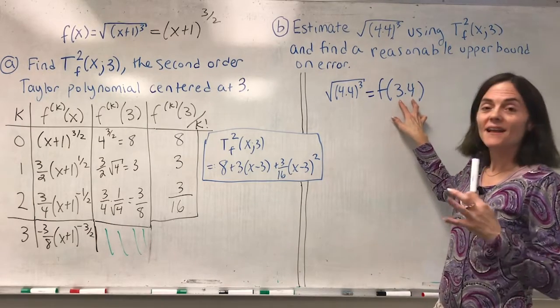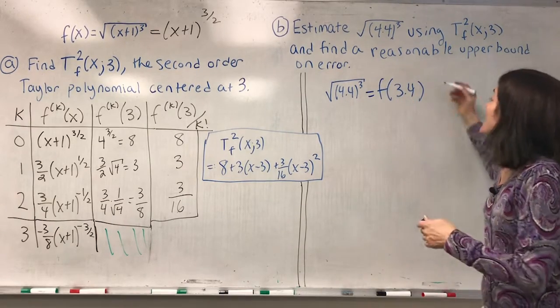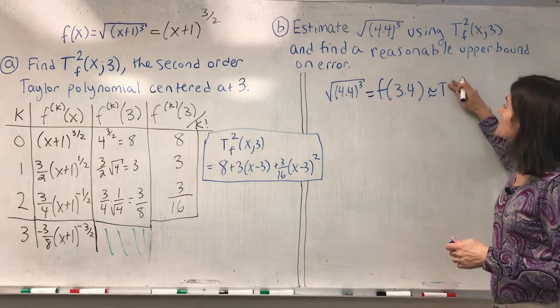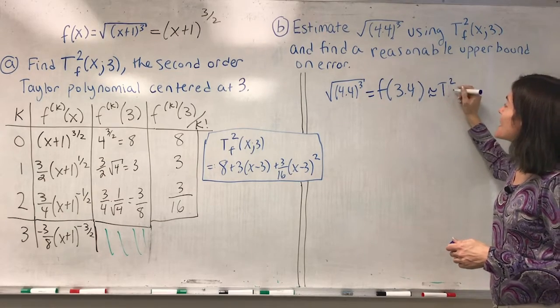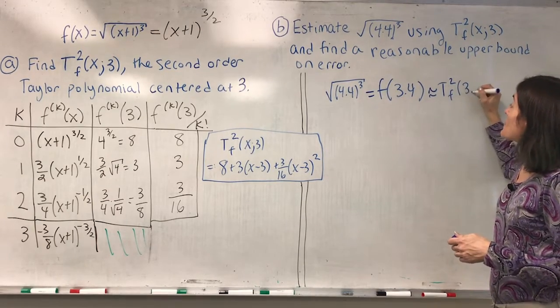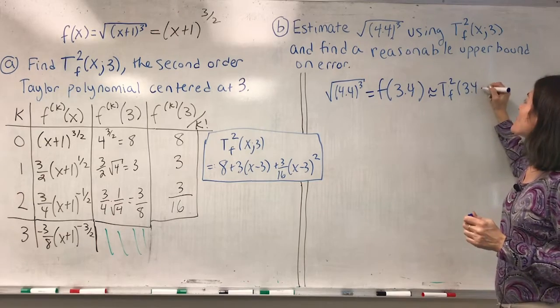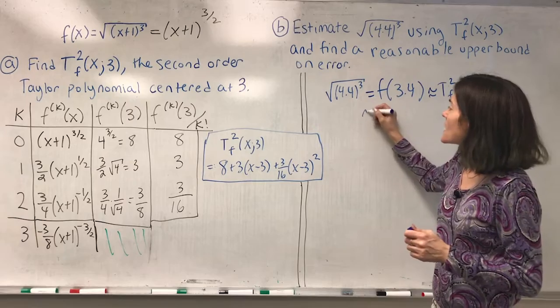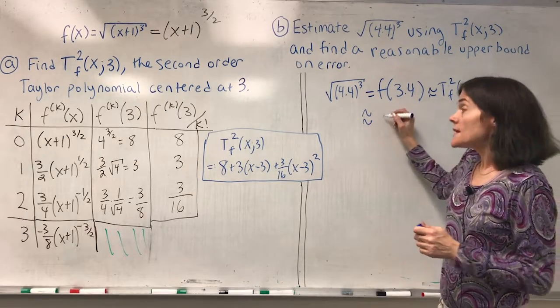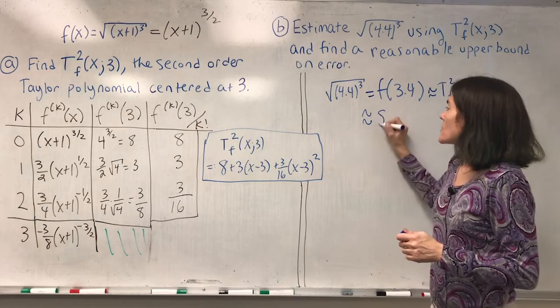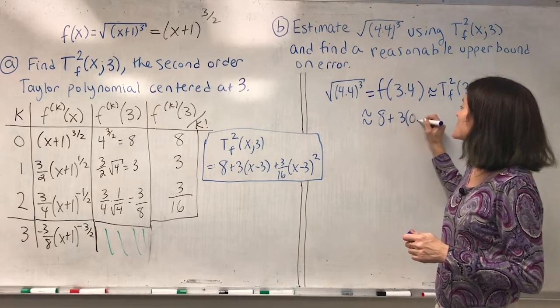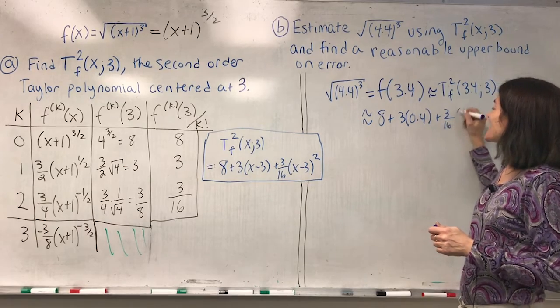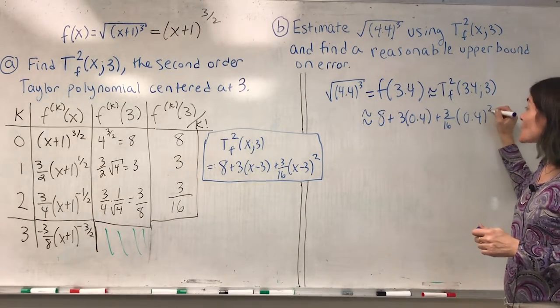And the reason I need to define this particular x is because I will evaluate my polynomial at 3.4 to get this approximation. This here is my polynomial. So I have 8 plus 3(0.4) plus 3 over 16 (0.4) squared.